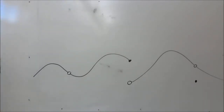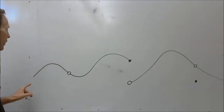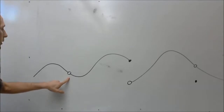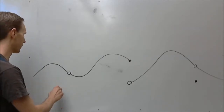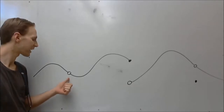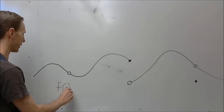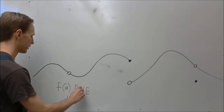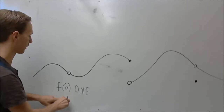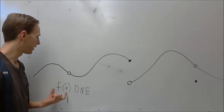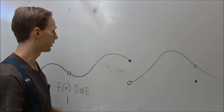This function here has three discontinuities, and I'd like to talk about what exactly makes them discontinuous. The first one is discontinuous here. The reason it's discontinuous is because if we call this x value a, f of a does not exist — fancy talk for saying there's no point there, no point corresponding with x equaling that x value.